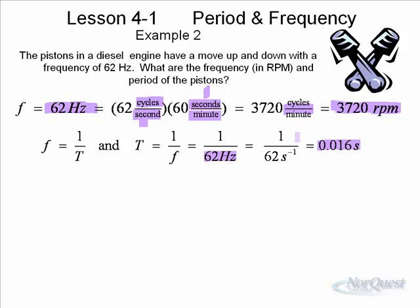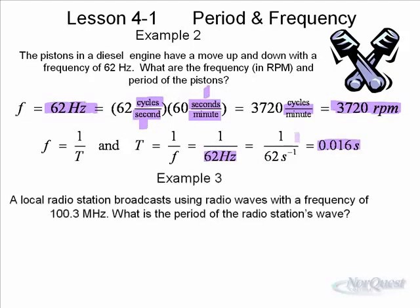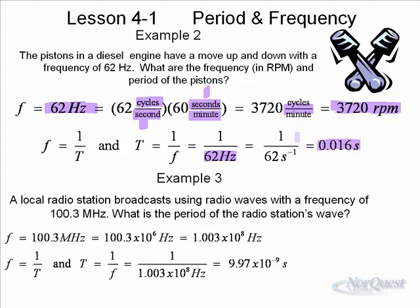So, radio stations give their call signals in Hertz. One popular radio station is 100.3. So what is the period of the radio station's wave? Well, if the frequency is 100.3, the radio station gives its frequency on the FM dial, usually in megahertz.